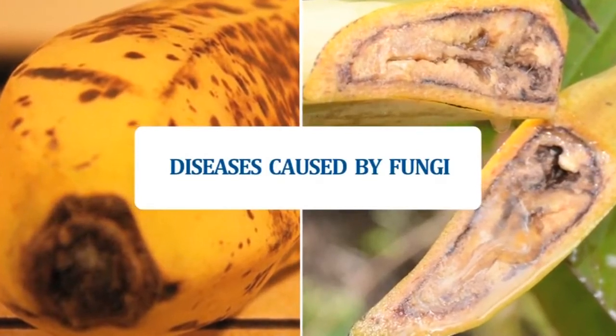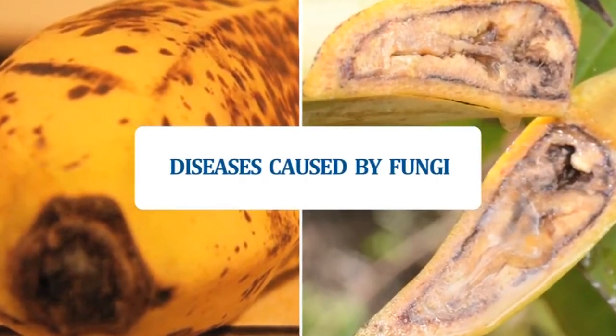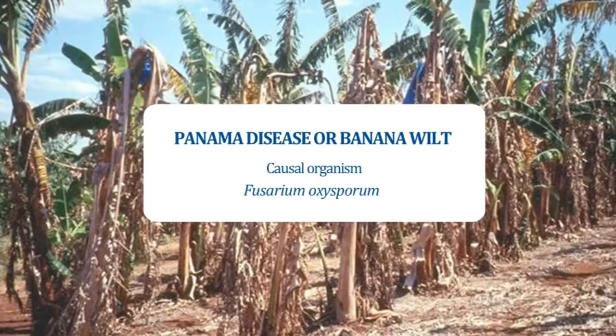Like many other crops, pests and diseases have significantly affected banana cultivation all over the world. Banana is much more vulnerable to diseases than to insect pests. They affect every organ of the plant and are caused by fungi, bacteria, viruses and nematodes. First, let's see the important diseases of banana caused by fungi. The first one is Panama disease or banana wilt.